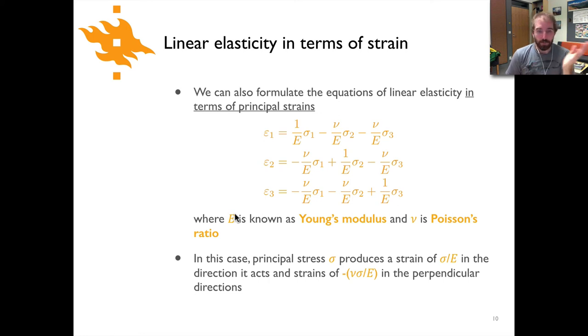In this case, E is what we've already seen, that's the Young's modulus, and nu is Poisson's ratio, which again these are both material properties of the rocks. In this case, if we want to restate what these equations are saying, we could say the principal stress sigma produces a strain of sigma over E, or sigma over Young's modulus, in the direction that it's acting, and strains of minus nu sigma over E in the perpendicular directions.